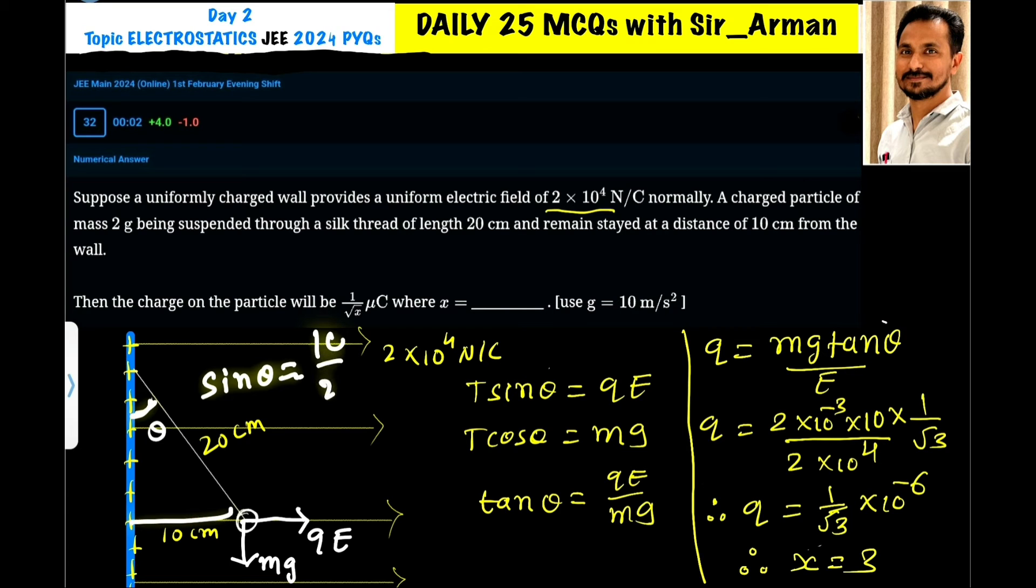The opposite is 10 centimeters and hypotenuse is 20, so it is 1/2. So sine θ is 1/2 means θ equals 30 degrees. The angle here is 30 degrees.